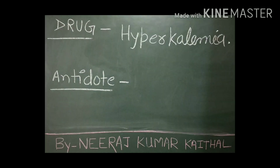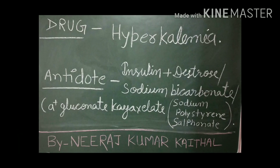Important: Hyperkalemia. Hyperkalemia is a condition in which the body's potassium level is increased. To treat this condition, which drug is used as an antidote? The answer is Insulin plus Dextrose, or Sodium Bicarbonate, or Calcium Gluconate. Kayexalate, also known as Sodium Polystyrene Sulfonate, is also given to treat hyperkalemia.